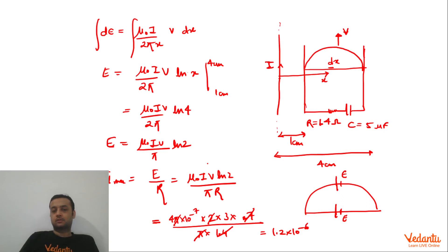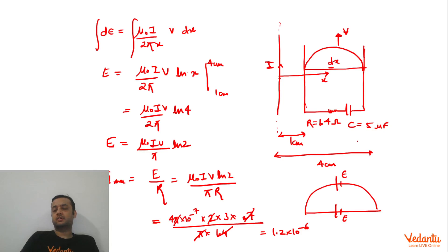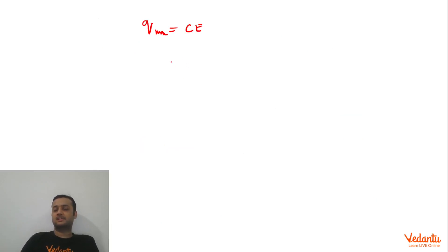So basically this assumption that velocity is changing or not, I max value will remain the same. This is where EMF value is constant because velocity is constant. So then charge Q max can be calculated as C into E.